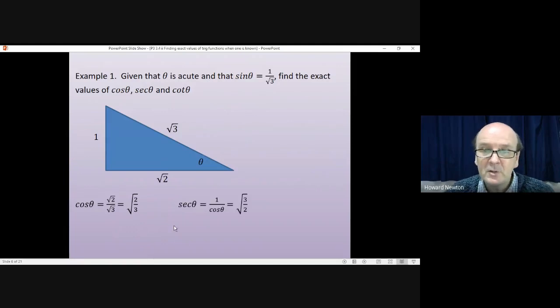Sec theta is 1 divided by cos theta, which is just 1 over our previous answer. So instead of root 2 over 3, you'll get root 3 over 2. Same fraction, but the other way up. Cot theta is 1 over tan theta. Tan theta is opposite over adjacent. So cot theta will be adjacent over opposite, which is root 2 divided by 1, which is just root 2.